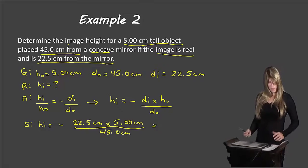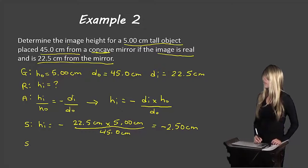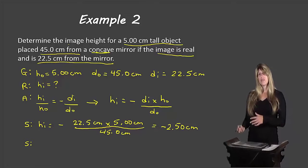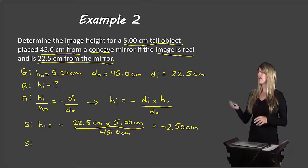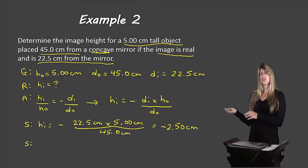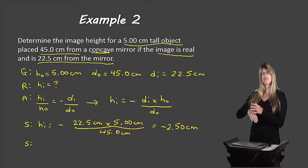Doing that math, we end up with a height of negative 2.50 centimeters. Remember, if height is negative, that indicates an inverted image. We're dealing with a concave mirror and the image is real — concave mirrors with real images always produce inverted images. So our answer of negative 2.50 centimeters is consistent: the image is real and inverted, which can exist in a concave mirror, confirming we have the correct sign.